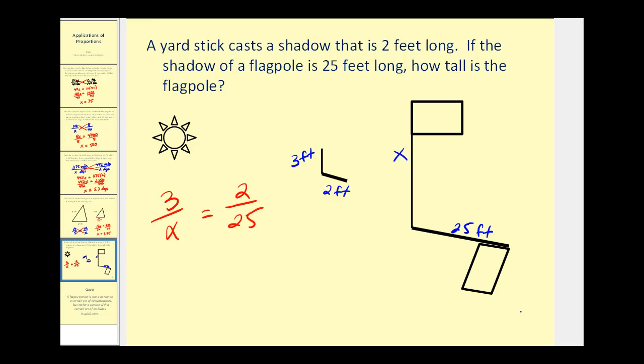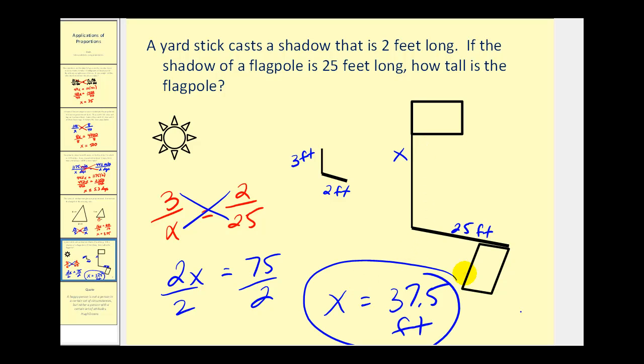And as always, we'll find our cross products. 2 times x must equal 3 times 25. That would be 75. Dividing both sides by 2, so x equals 37.5 feet, which would be the height of that flagpole. I hope you found these sample problems helpful.